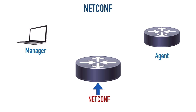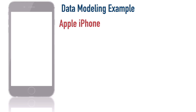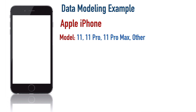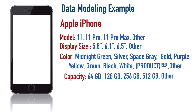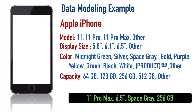Let's do a quick review of Yang data modeling discussed earlier in the course. I gave you an example of an Apple iPhone — we could use the Yang data model to describe an iPhone by specifying its different characteristics. For example, what model is it? We could specify the display size, the color, the storage capacity. My phone, as an example, is an Apple iPhone 11 Pro Max with a 6.5-inch display, space gray color, and 256 gigabytes of storage. That's a way to model an iPhone.